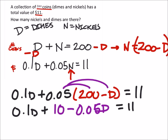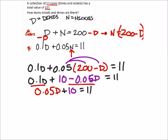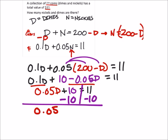Now when I combine my like terms, which are the two D's. So now when I combine these two terms, I got 0.1D minus 0.05D. That's a 0.05D. I'm still going to add my 10. And this will equal 11. So to solve for D, I'll subtract 10 from both sides. And I have 0.05D equals 1.